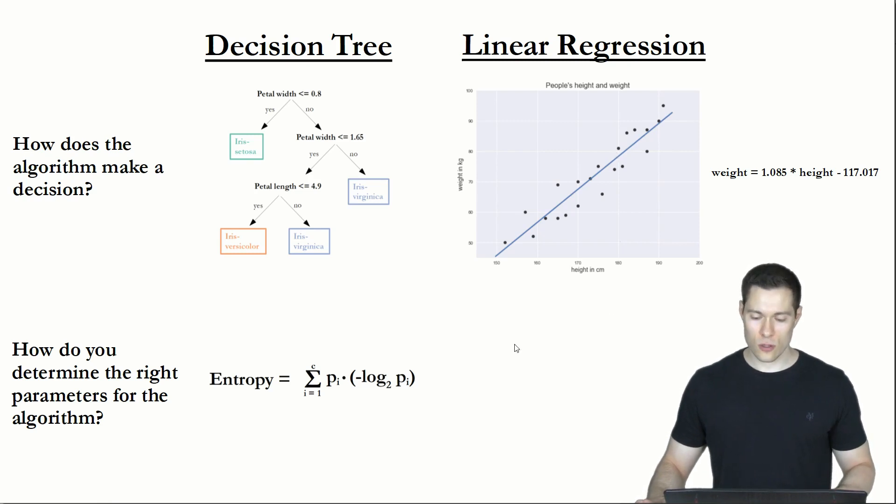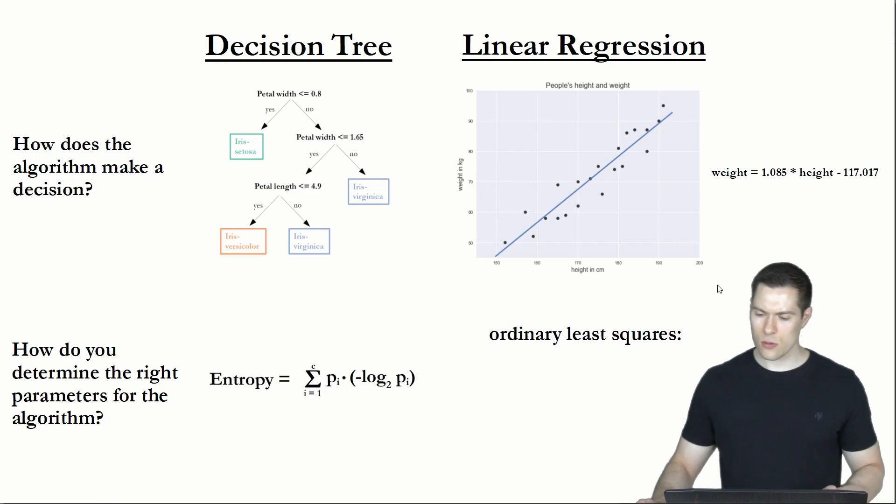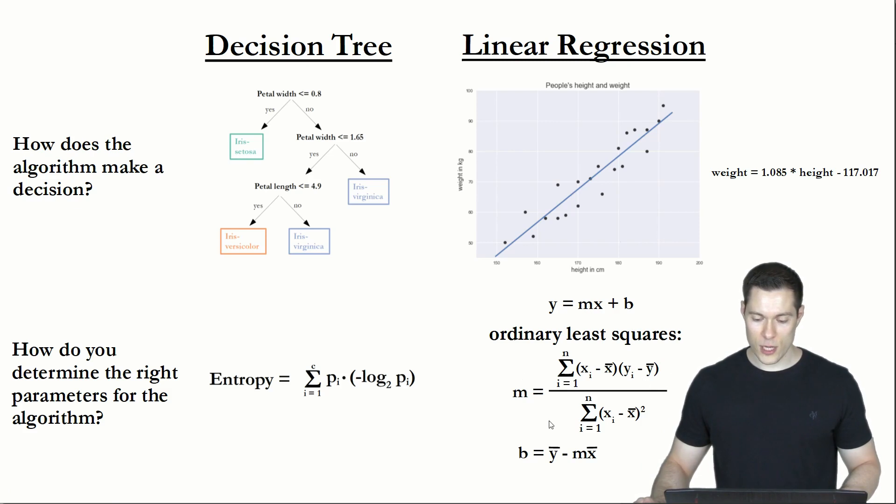then we can use a method called ordinary least squares. And if we now write this formula in its more general form, where m is the slope and b is the y-intercept, then we can simply calculate the best values for those parameters by using those equations.